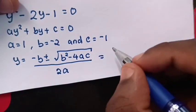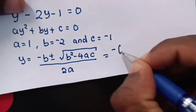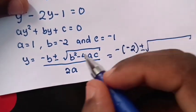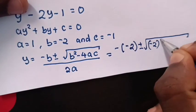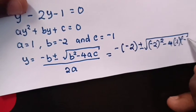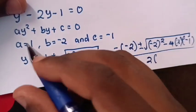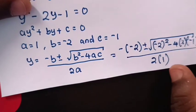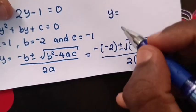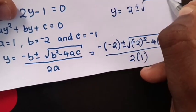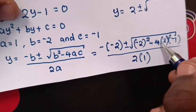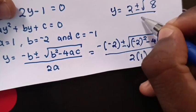We substitute our values. So y equals 2 plus or minus square root of negative 2 squared minus 4 times 1 times negative 1, over 2 times 1. That gives square root of 4 plus 4, which is square root of 8, over 2.